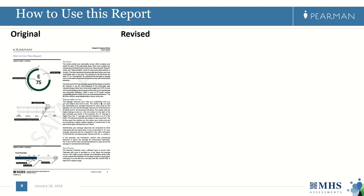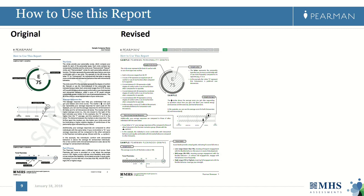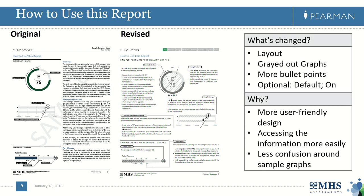Next is the 'How to Use This Report' page. The feedback we received was that the text is heavy and the majority of clients confuse this page with their own results. So we changed the layout — we grayed out the graphs so clients don't confuse them with their own results, and we added more bullet points so they can access the information more easily. We also made this page optional so you can turn it on and off. With this more user-friendly design, information is easier to access and there is less confusion around the sample graphs.